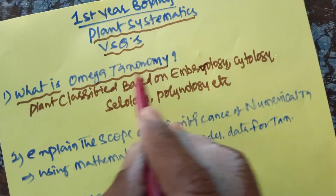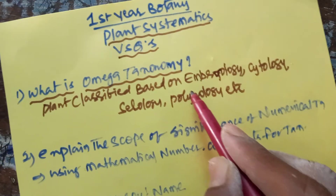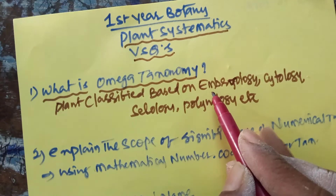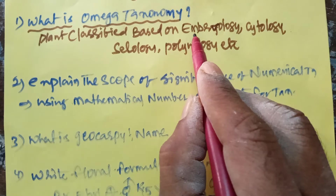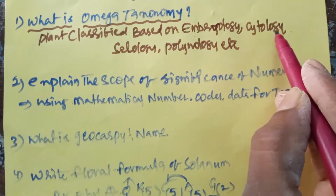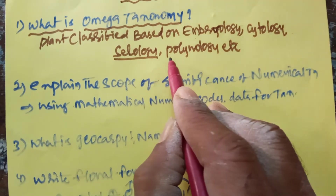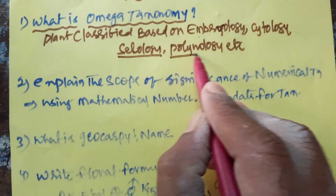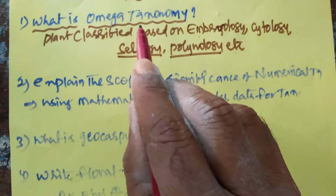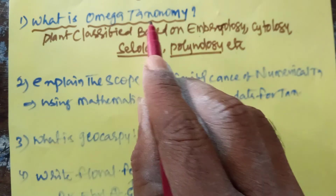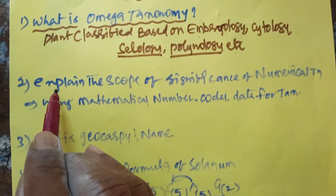So omega taxonomy means different plants classified based on morphological characters, embryological characters, cytological characters, serological characters, and palynology. That classification is called as omega taxonomy.